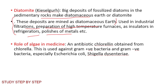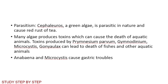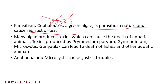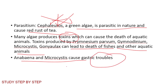Role of algae in medicine: Chlorellin is an antibiotic obtained from Chlorella, used against gram-positive as well as gram-negative bacteria, especially gram-negative bacteria such as Escherichia coli and Shigella dysenteriae. Parasites: Cephaleuros, a green alga, is parasitic and causes red rust in tea. Many algae produce toxins that cause death of aquatic animals; toxins are produced by Prymnesium parvum, Gymnodinium, Microcystis, and Gonyaulax, leading to death of fish and aquatic animals. Anabaena cystis causes gastric troubles.